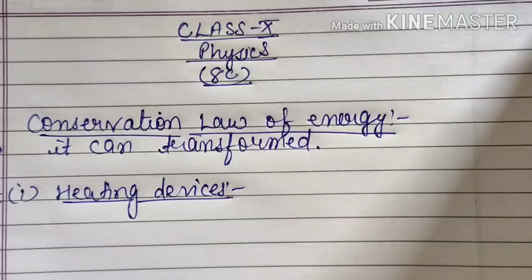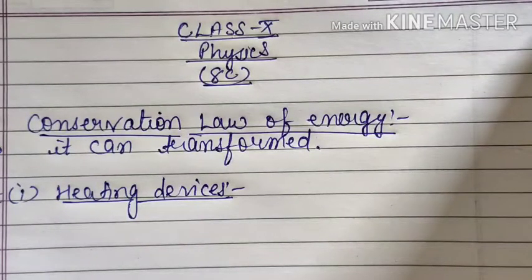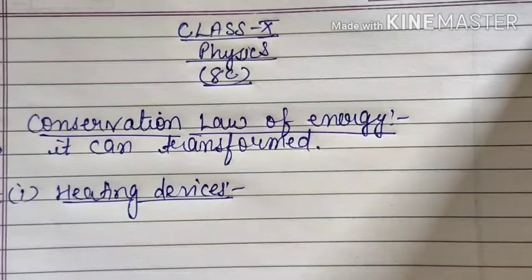The first thing is the conservation law of energy. The conservation law of energy states that the total energy of the universe always remains constant — it can neither be created nor be destroyed. It can only be transformed from one form to another, and here we will make use of exactly that fact.